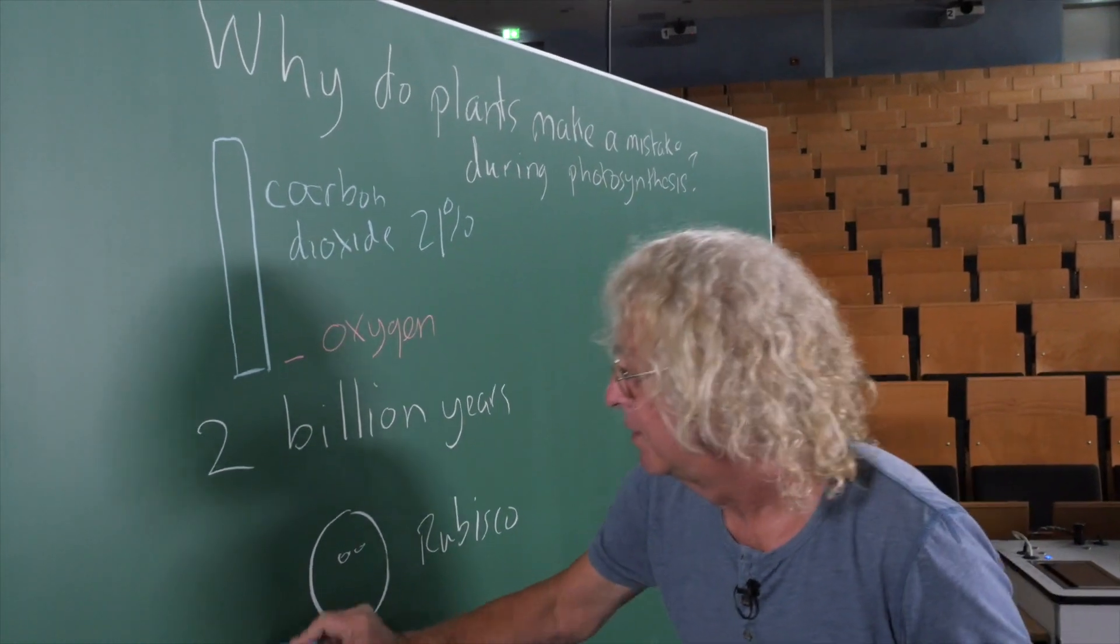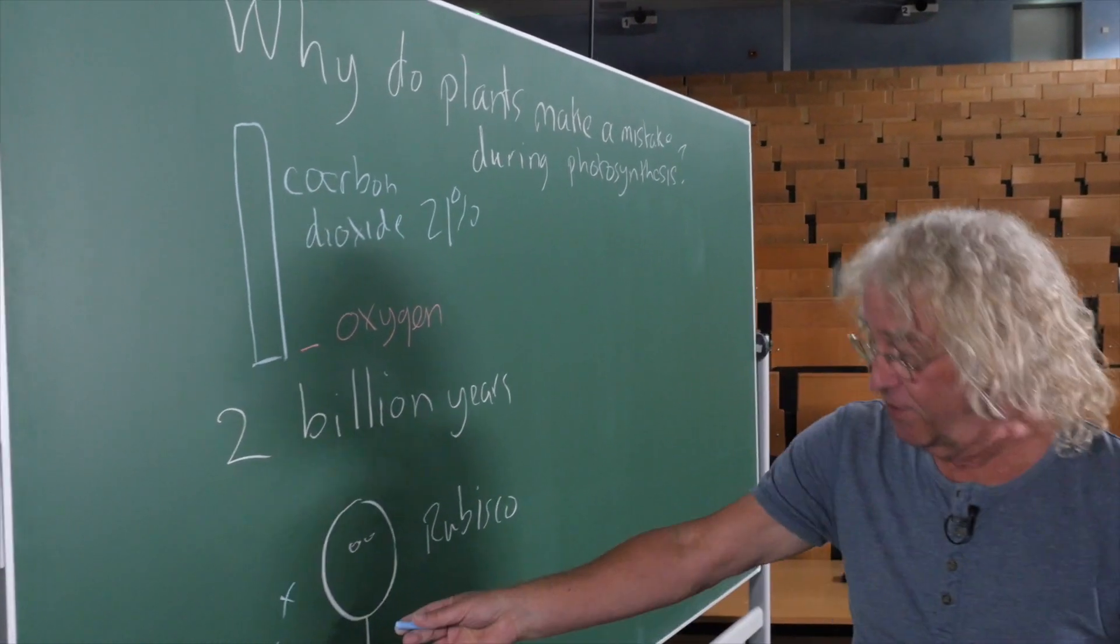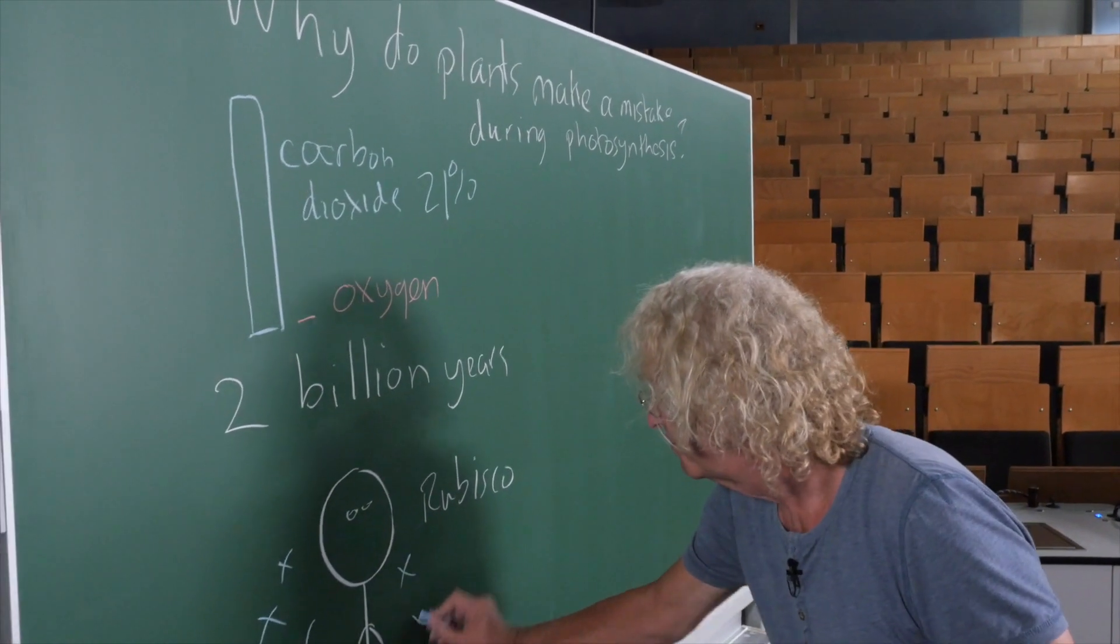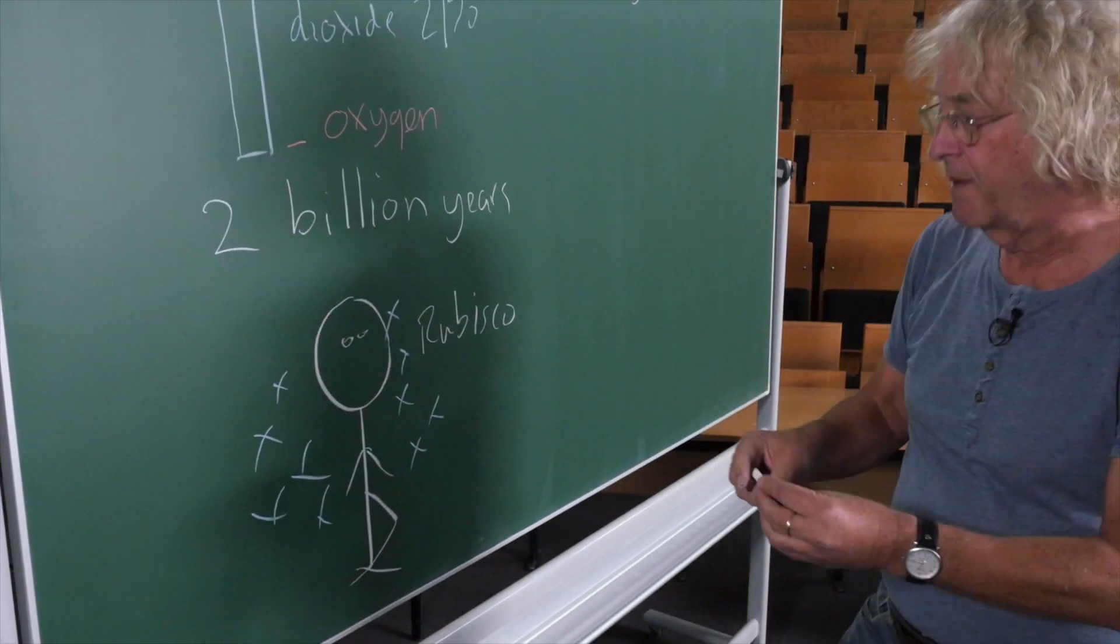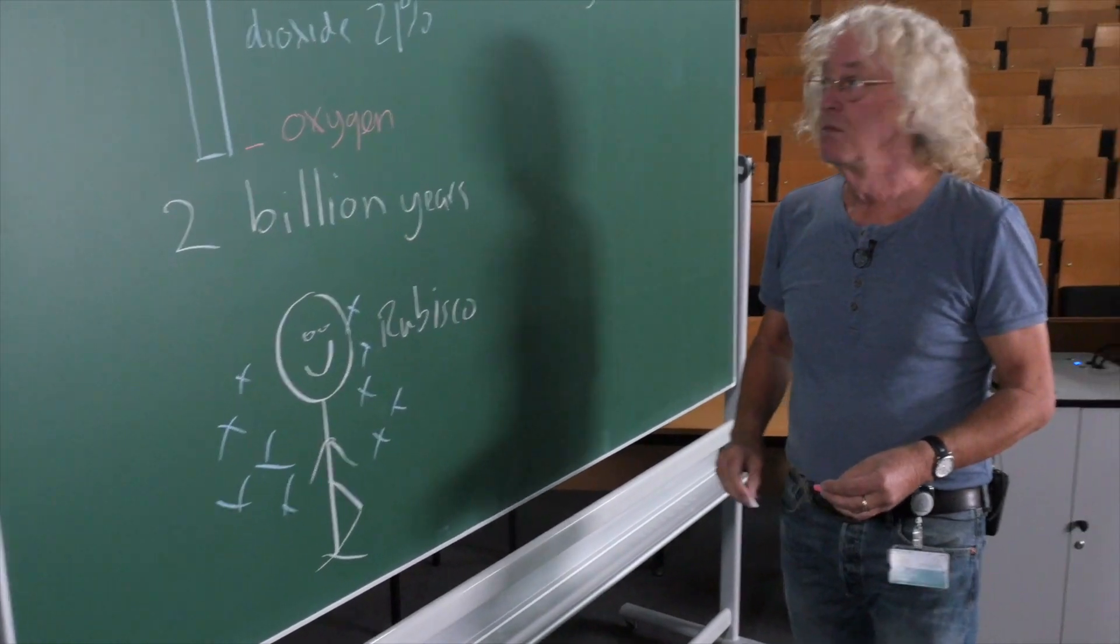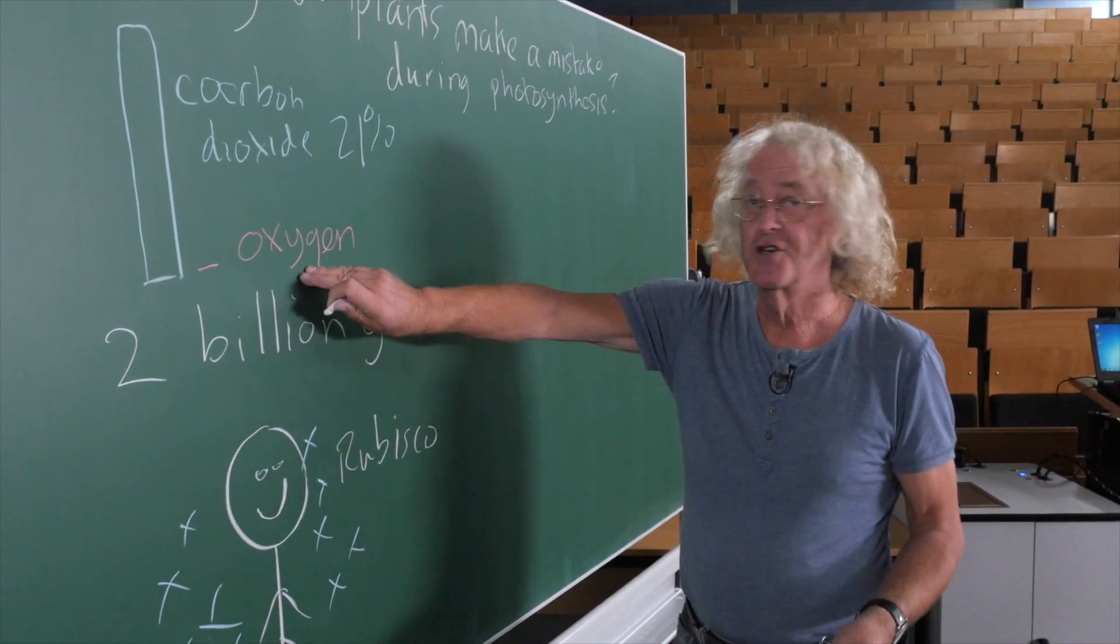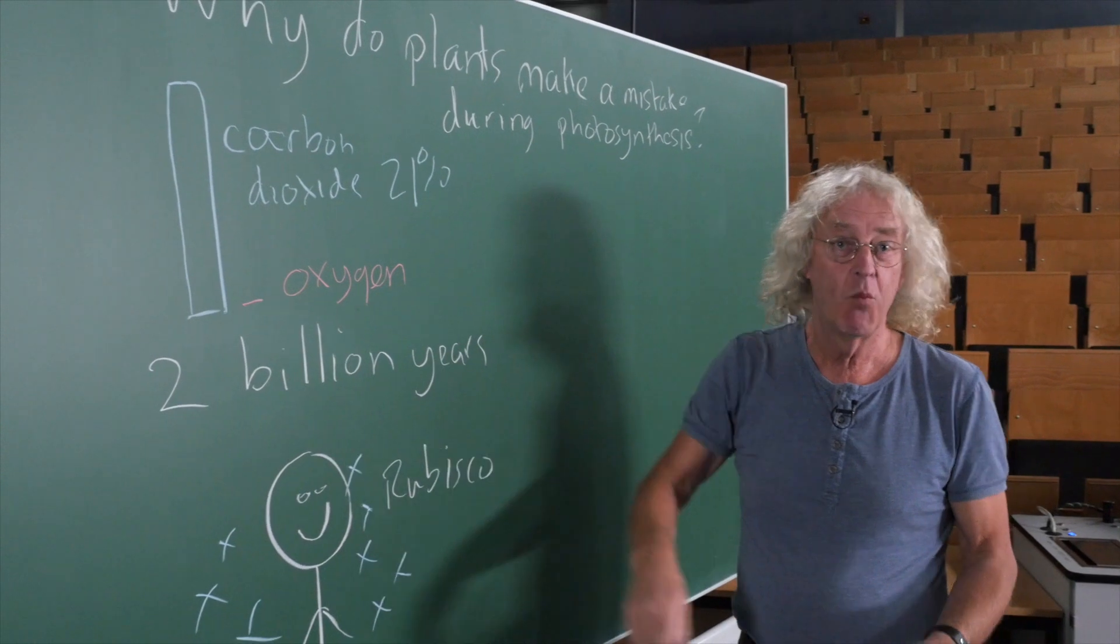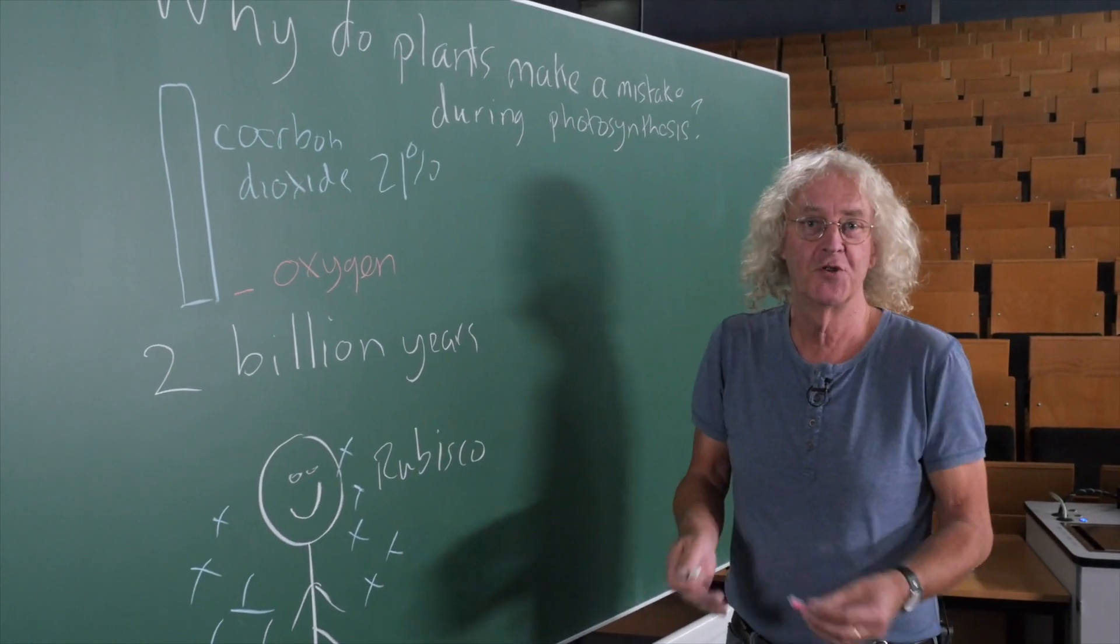So Rubisco - an X is carbon dioxide - there was lots and lots of carbon dioxide. Rubisco was happy, and the side reaction with oxygen didn't matter because there wasn't any oxygen. So there was no side reaction.